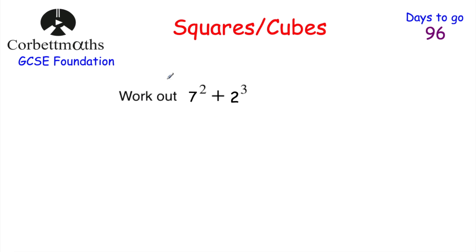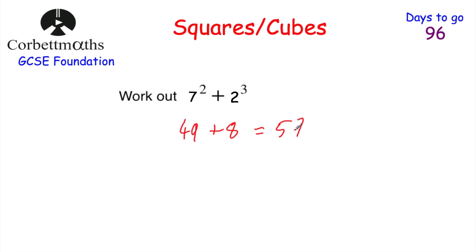Here's another question — pause to give it a try. Work out 7 squared plus 2 cubed without a calculator. 7 squared equals 49 (7×7). 2 cubed: 2×2×2 equals 8. So 49 plus 8 equals 57. Therefore 7 squared plus 2 cubed is 57. If you typed this into your calculator you'd also get 57.